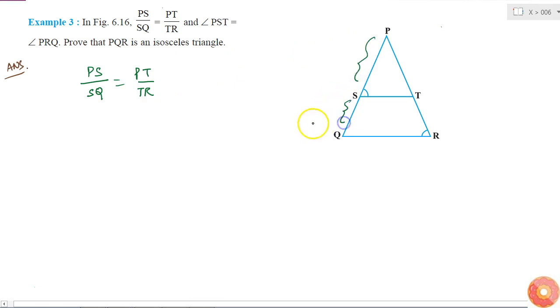PS by SQ is equal to PT by TR, right. So when do we say this? If a line cuts the two sides of a triangle in proportion, then we can say that that line is parallel to the third side.